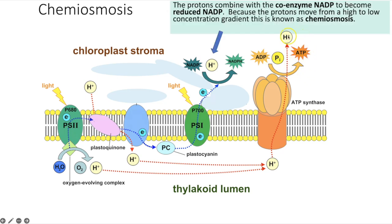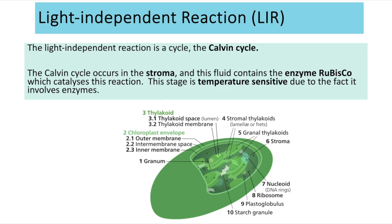Those protons have now moved back across to the stroma. Some of them are then picked up by NADP, which also picks up the electrons at the end of the electron transport chain — that is how we create the reduced NADP, or NADPH. So that is how we get both the ATP and the reduced NADP, both of which are needed for the light-independent reactions, also known as the Calvin cycle.